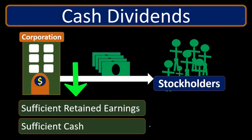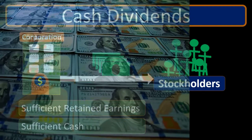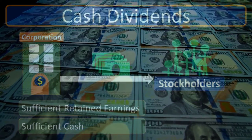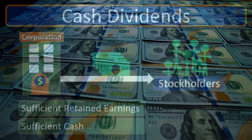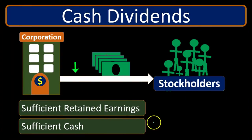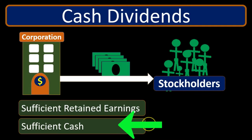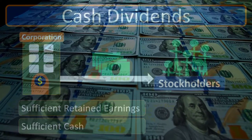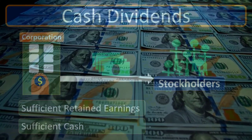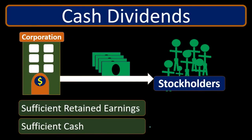Even if a company has both sufficient retained earnings and cash, it may still choose not to pay a dividend because it wants to keep the money for future investments. This can become contentious — if a company has a lot of cash and retained earnings, stockholders may question why no dividend is being paid. If the company isn't using that cash to generate future revenue or make investments, stockholders will push back.